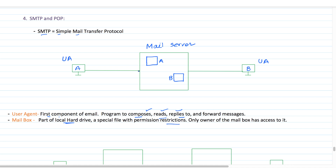To send an email from A to B, the user agent will compose the email and forward it to the mailbox of receiver B. From this mailbox, B will retrieve the saved mail using its user agent, which will fetch the email. This is how the process works when both systems are connected with the same email server — it is a very simple scenario.